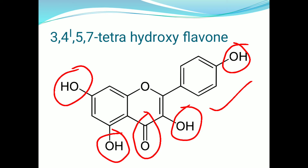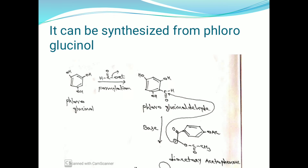Camphorole is also called 3,4,5,7-tetrahydroxy flavone. This camphorole can be synthesized from phloroglucinol. Phloroglucinol is treated with ethyl formate — the formula of ethyl formate is HCOO-C₂H₅.